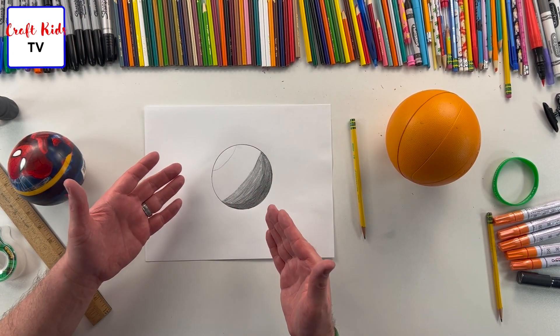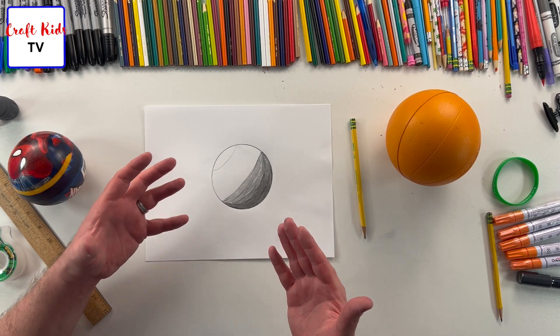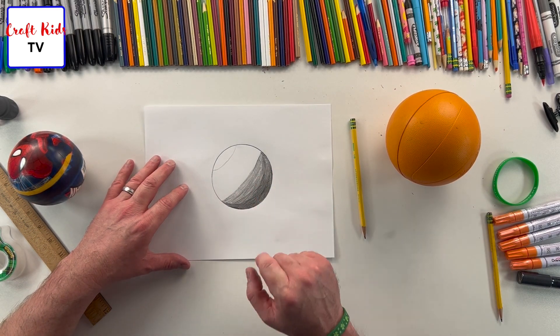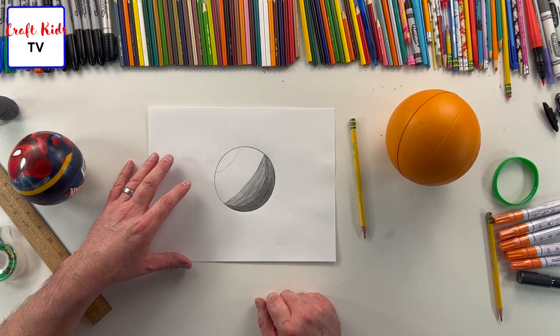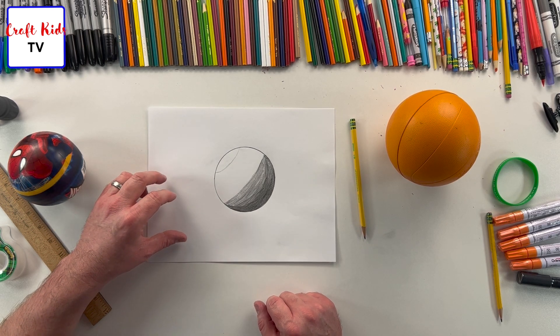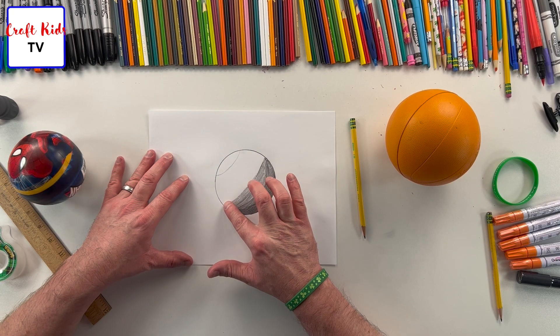So what I'm gonna do, since I'm working in pencil, and if you're working in pencil, it's a great medium for using your finger to smudge. Sometimes with colored pencil that doesn't work. Of course with marker that's not gonna work either, but there's different techniques.